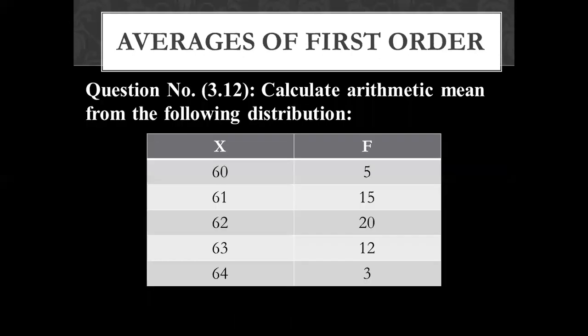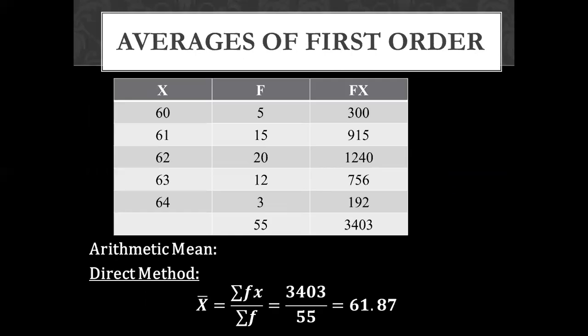Next, we have question number 3.12. We need to calculate the distribution. The values given are 60, 61, 62, 63, 64 with an interval gap of 1. We have to calculate the mode, median, and mean. The x and f values are given. We multiply x with f to calculate fx, then total fx. Using the formula, we put 3403 divided by 55, which gives 61.87.